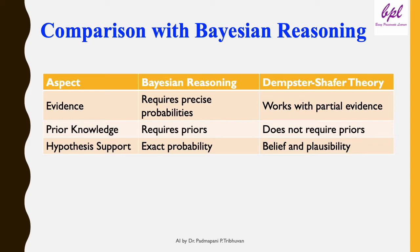Regarding hypothesis support: in Bayesian reasoning the result is an exact probability for each hypothesis — for example, after applying Bayes' theorem you can say there is a 70% probability that a hypothesis is true. This precise nature makes Bayesian reasoning highly interpretable but dependent on the accuracy of input probabilities. DST, on the other hand, provides two measures: belief and possibility. Belief represents the minimum support or confidence for a hypothesis based on evidence directly supporting it, and possibility represents the maximum possible support considering all evidence that does not contradict the hypothesis.